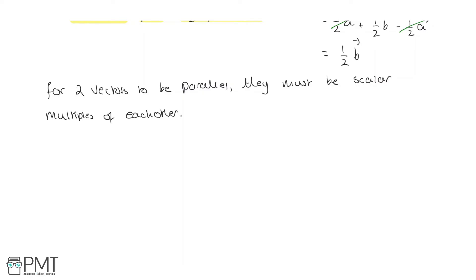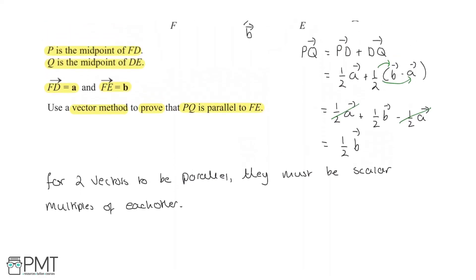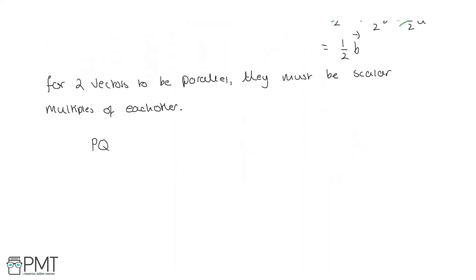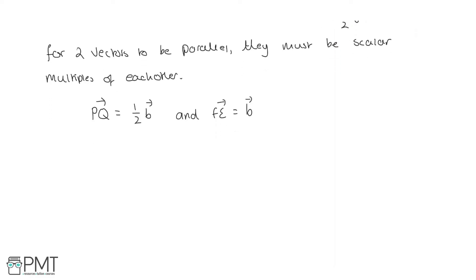And what this means is, say we have a vector S and a vector T, S will be K times T, where K is just a constant, whether that be half, two, et cetera. So, we are going to say that PQ equals half B, and FE equals B. What this means is, if we're substituting it, that PQ equals half times the vector FE.